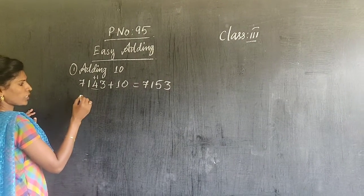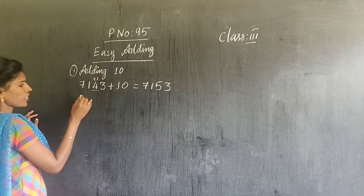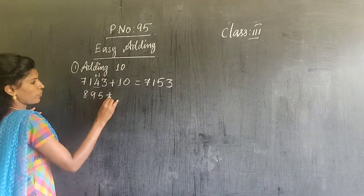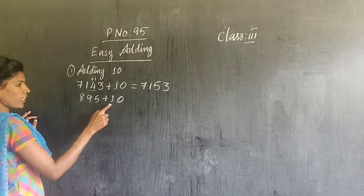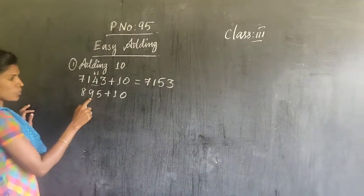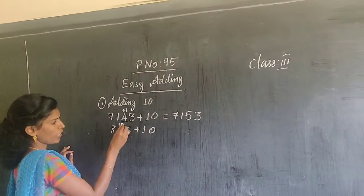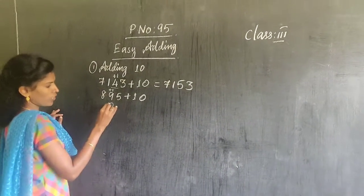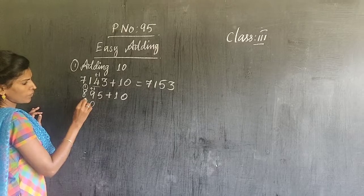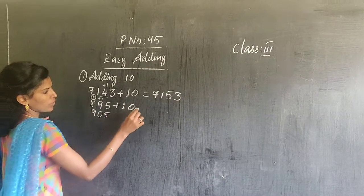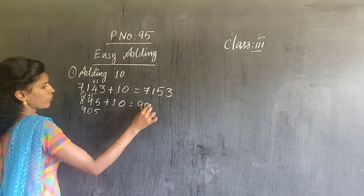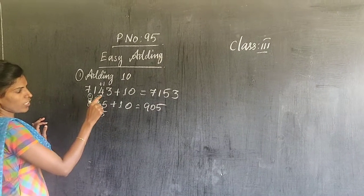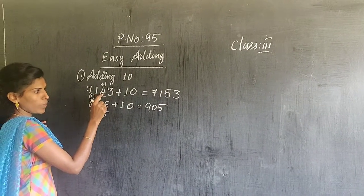Let me give one more example. Suppose there is a number 895. With this you have to add 10. To add 10, the tens place will increase by 1. But here the tens digit is 9, so 9 plus 1 is 10. You put 0 in the tens place and carry the 1. So the hundreds digit becomes 9, and the answer is 905. When 9 comes in the tens place, there will be a carry. Otherwise, only that one digit increases.